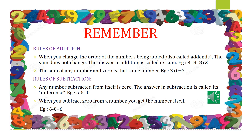Rules of Subtraction: any number subtracted from itself is 0. The answer in Subtraction is called its difference. For example, 5 when subtracted with 5 gives you 0. When you subtract 0 from any number, you will get that number itself. For example, 6 when subtracted with 0 gives you 6.